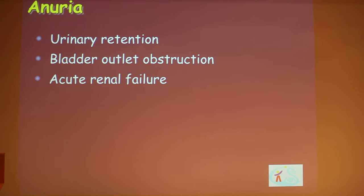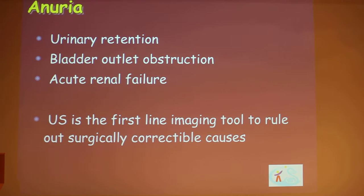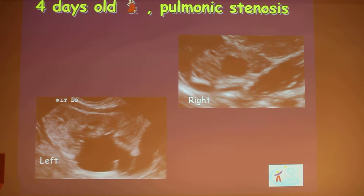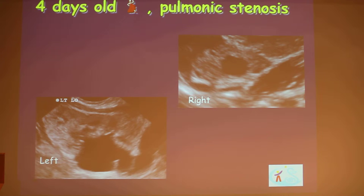Bladder outlet obstruction can be secondary to tumors like rhabdomyosarcoma in the prostate, posterior urethral valves in boys, and Müllerian abnormalities in females. For anuria, ultrasound is the first-line imaging tool to rule out surgically correctable causes — in other words, it's either obstructed or it isn't. Just last week, a four-day-old female was referred to our neonatal department from another hospital with pulmonic stenosis and acute renal failure, with a creatinine of five.